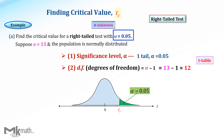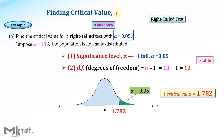We found the t-score as 1.782. Since this is a right-tailed test, the critical value should be positive. So the t-critical value for this test is 1.782.